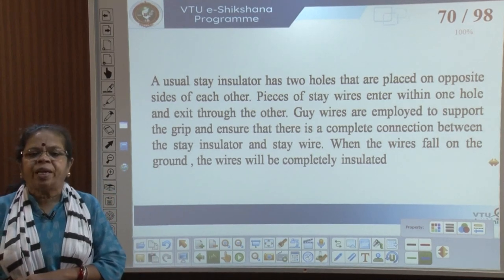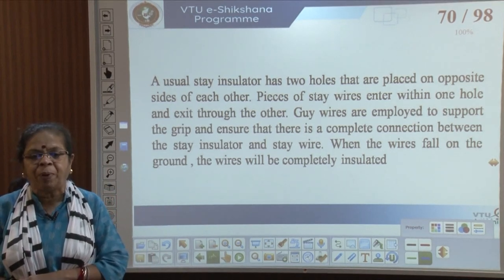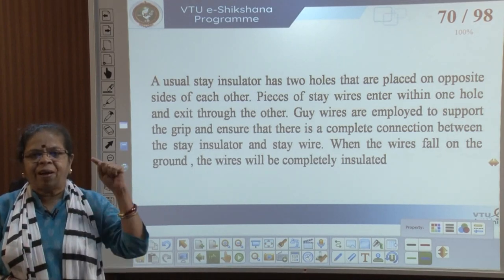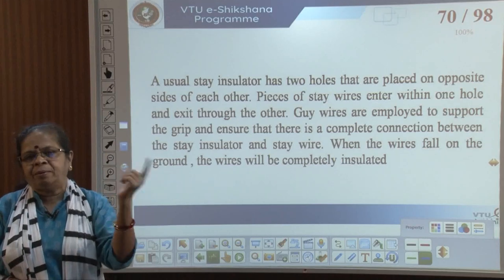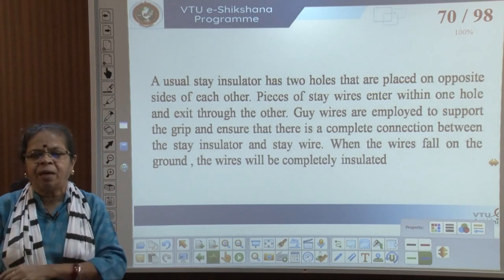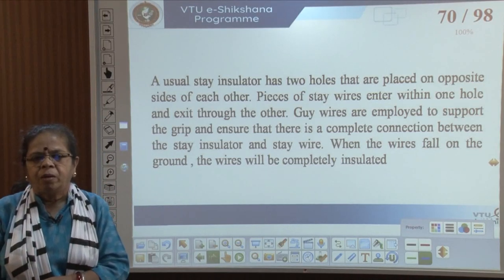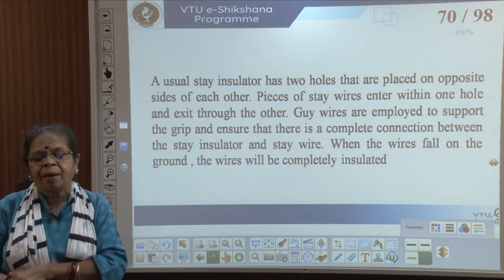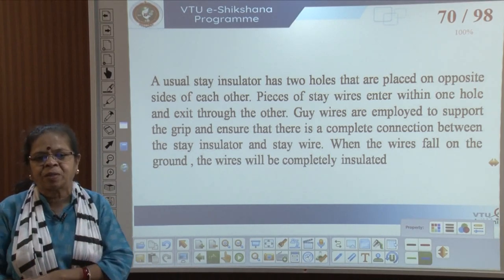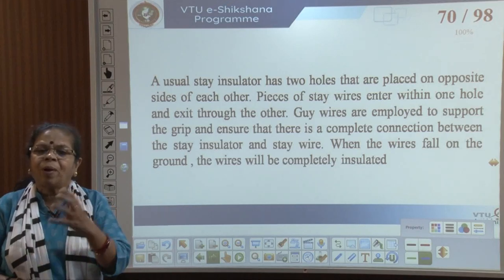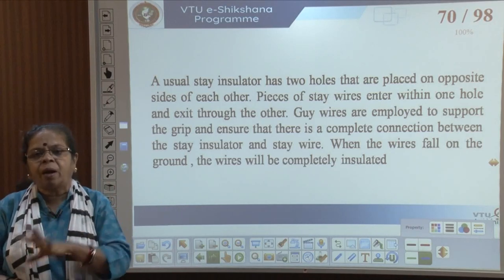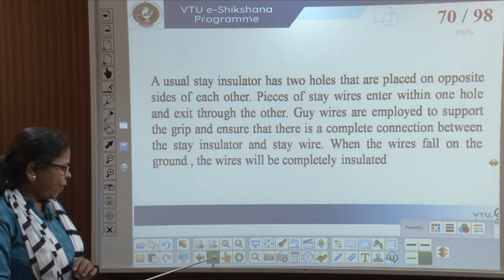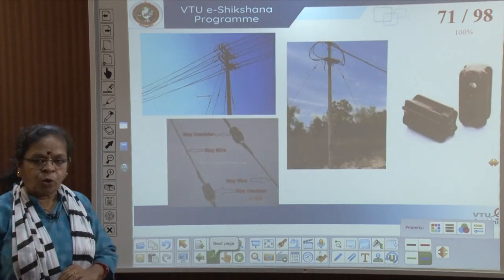A typical stay insulator has two holes placed on opposite sides; the stay wire enters at one end and is taken out at the other. Guy wires are used to support the grip. When the stay wire falls on the ground, it is completely insulated, preventing accidents and electrocution.